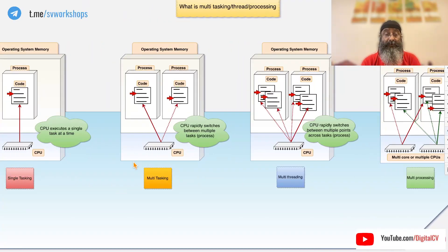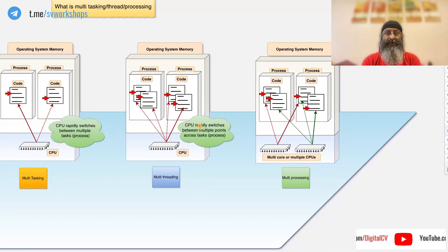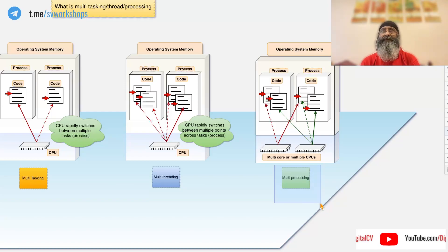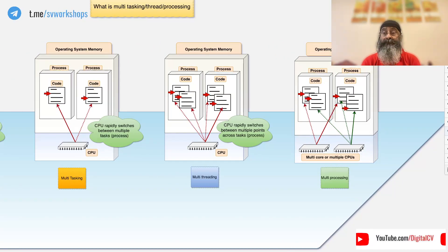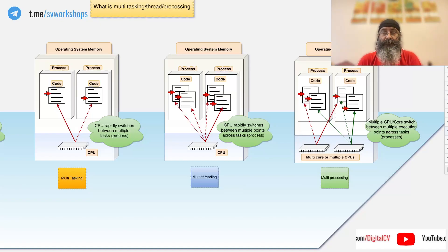This is multi-tasking even though there are multiple processes. I know, a bit confusing. Think of this as multi-processing, that is when you have multiple processes. So in this case, multiple cores or multiple processes can execute multiple points of execution within the same process or across.